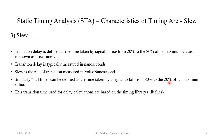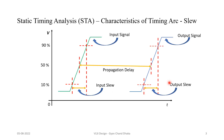The transition time used for delay calculations is based on the timing library. The slew and delay information for a particular timing arc is calculated from slew parameters present in the timing library. We will see what those parameters are and how the STA tool uses that information to calculate the transition time. Now let's understand slew in more detail. We have a cell with an input signal transitioning from low to high, and the output signal also transitioning from low to high — this characteristic looks like a buffer.